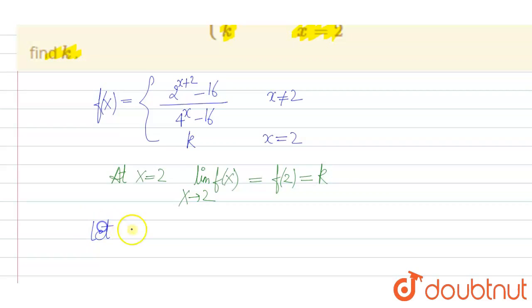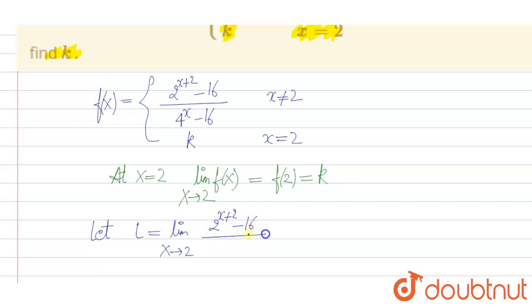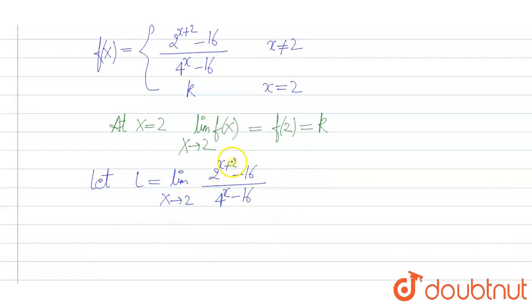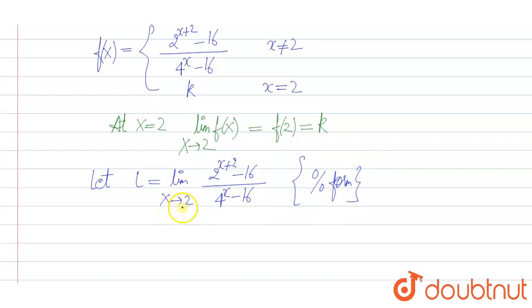Let L equal to limit as x approaches 2 of f of x. When x approaches 2, the function is 2 raised to power x plus 2 minus 16, divided by 4 raised to power x minus 16. If we put x equal to 2, the numerator becomes 2 raised to power 4 minus 16, that is 16 minus 16, which is 0. In the denominator also, 4 to the power 2 is 16, so 16 minus 16 is also 0. So this is a 0 by 0 form, and we cannot directly put x equal to 2 here.